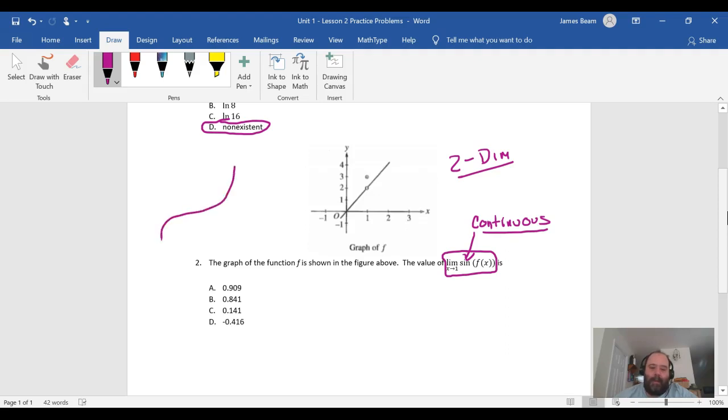This only holds in two-dimensional reality. When you get into multivariate calculus you're going to see that that doesn't hold. Right now though, we'll work with that for what we've got here. The sine curve is definitely continuous—it's going up and down and up and down, and I can keep tracing the whole thing with my pencil as long as I want to.